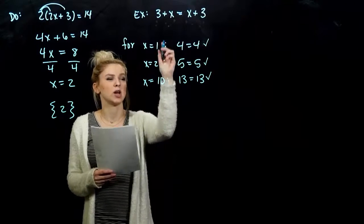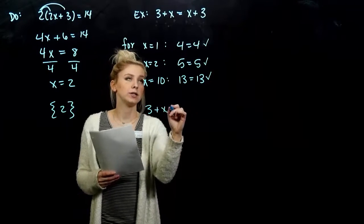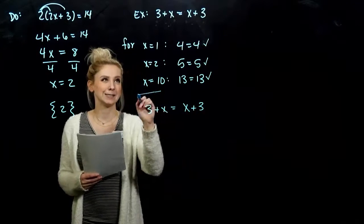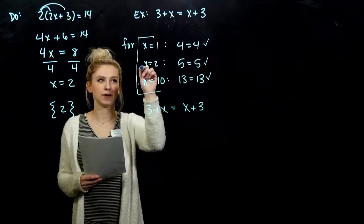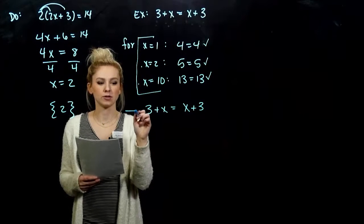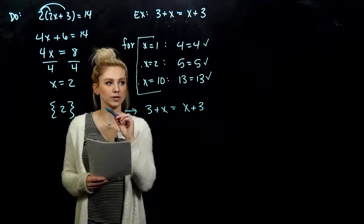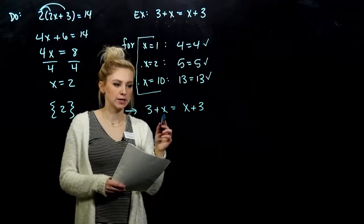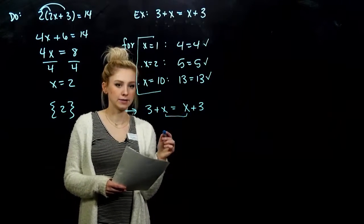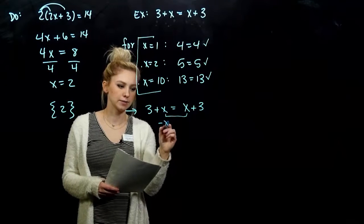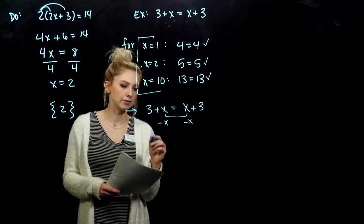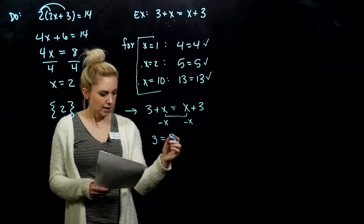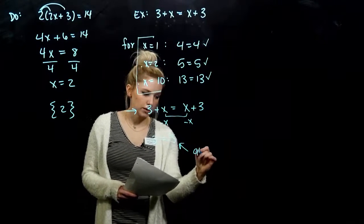So now let's solve this equation using the addition principle. This is evaluating for specific values of x. We want to be able to solve it generically and show that it works for any x we're going to plug in. So let's just pretend that we're trying to get our x's together on the same side. I'm going to subtract x from this side. What I do to one, I have to do to the other. What am I left with? 3 is equal to 3. A statement that's always true.